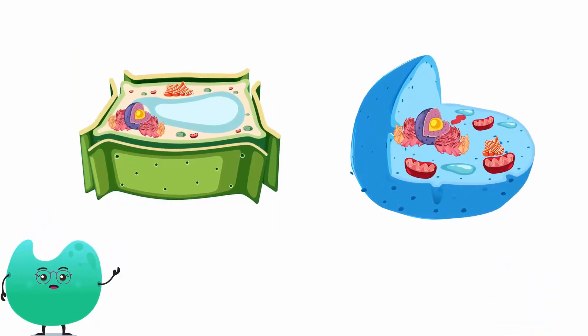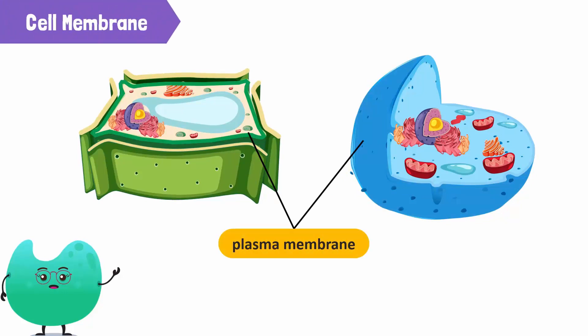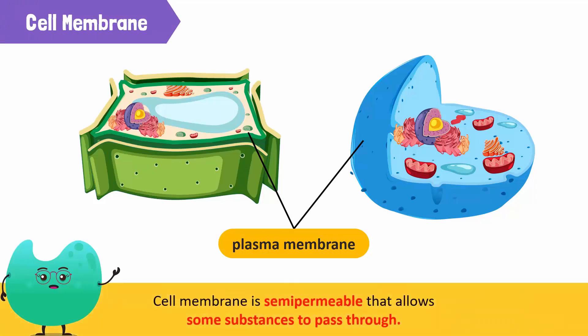Both animal and plant cells are surrounded by a thin layer called the plasma membrane, which is also known as a cell membrane. This membrane is very thin and it's semi-permeable. Being semi-permeable means that it allows only some substances to pass through.